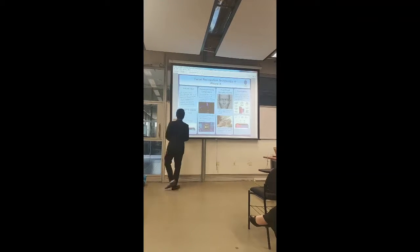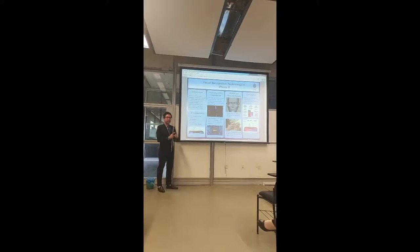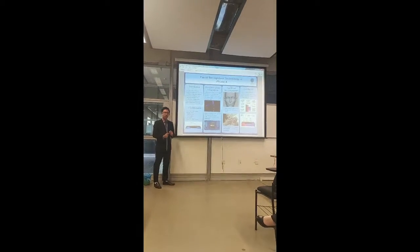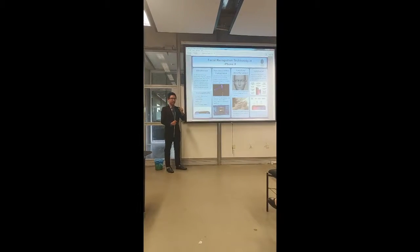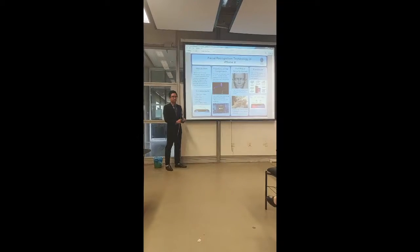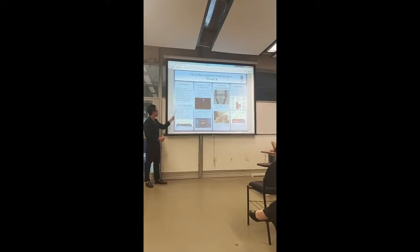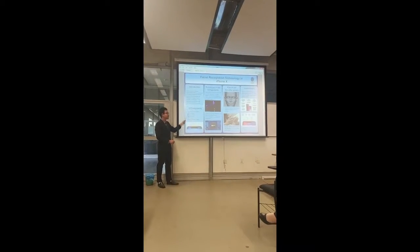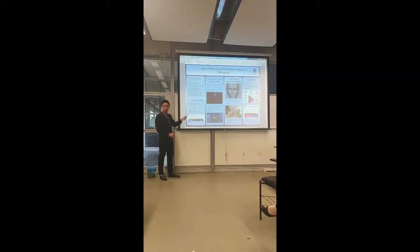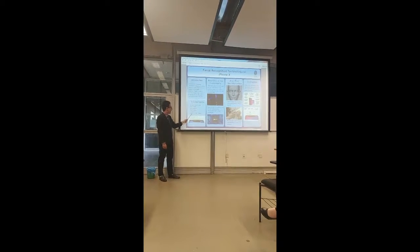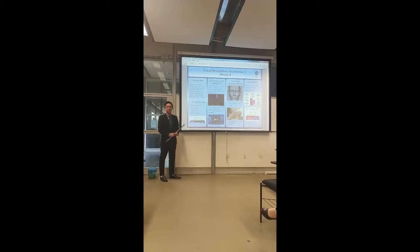On the iPhone X, there is a black bar on top. On that black bar, it includes six main components. They are the true depth camera system, the infrared camera, the flood illuminator, a regular camera, dot projector, and lastly, Apple's latest A11 bionic chipset.